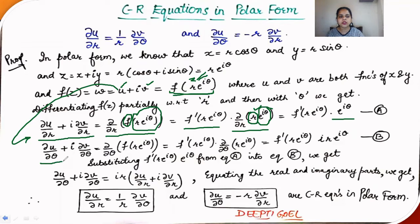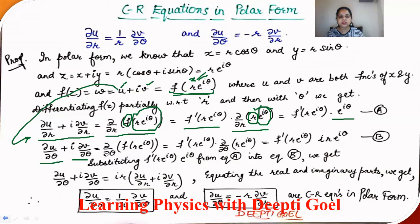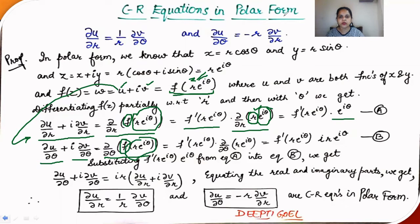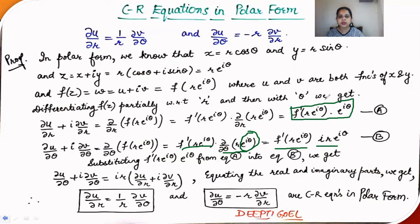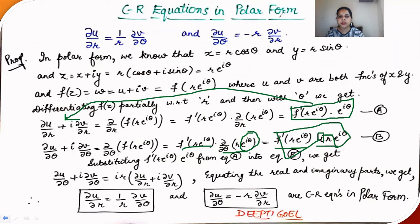Similarly, differentiating with respect to θ, we get ∂u/∂θ + i ∂v/∂θ = f'(re^(iθ)) · ire^(iθ). We note that f'(re^(iθ)) · e^(iθ) equals ∂u/∂r + i ∂v/∂r. Substituting this into the θ-differentiation equation, we get ∂u/∂θ + i ∂v/∂θ = ir(∂u/∂r + i ∂v/∂r).